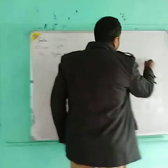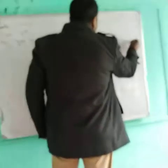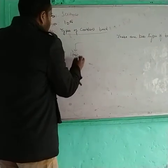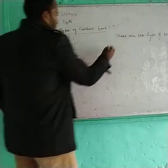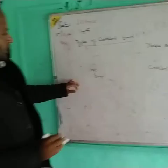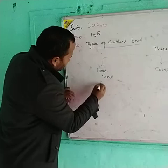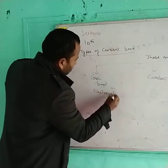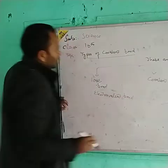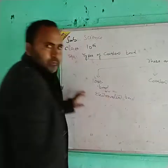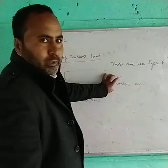There are two types of bonds. One is Ionic bond, which is also known as Electrovalent bond, and the other is Covalent bond.